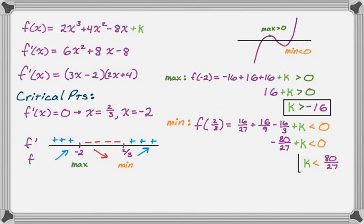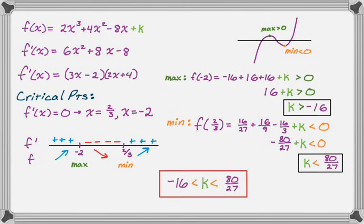So we have this, and we have this. If we combine those into one compound inequality, so we get -16 < k < 80/27. As long as that's true, both the maximum will be greater than zero, and the minimum will be less than zero. And that forces the cubic to have three distinct roots, and that's what we're trying to do. So you'll run into this type of problem frequently. It's a pretty famous early calculus problem. I hope you found this helpful, and good luck.